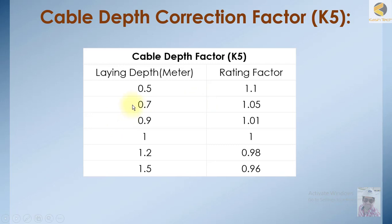Then we have another correction factor called the depth factor — how deep you are burying the cable underground. As the depth increases, the cable will be more derated. You can see that at 0.5 meters depth the correction factor is 1.1, at 0.7 meters it reduces to 1.05, at 0.9 meters it comes to 1.01, at 1 meter it is 1, and at 1.2 meters it goes down again. This is the cable depth correction factor K5.